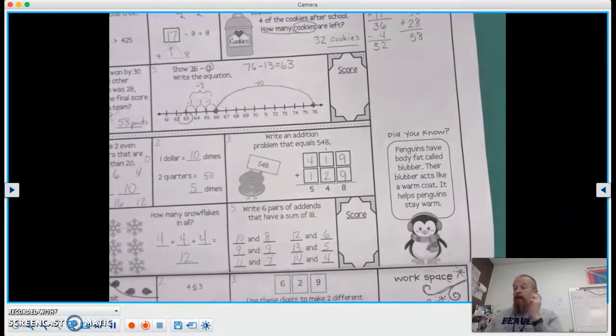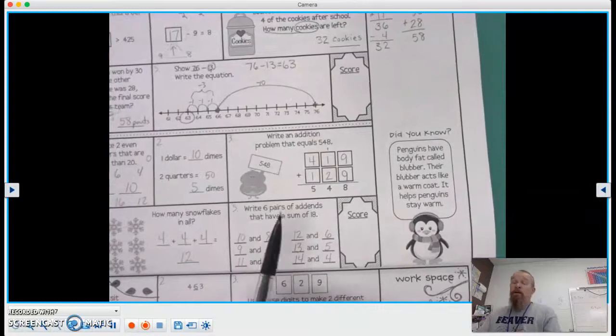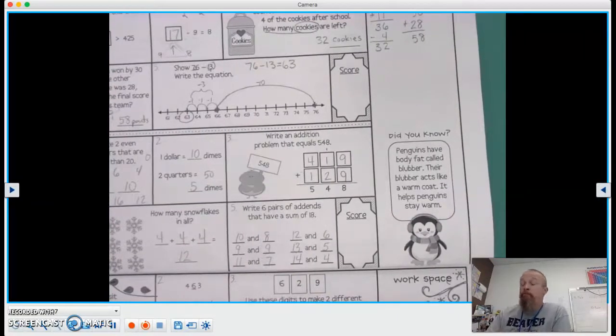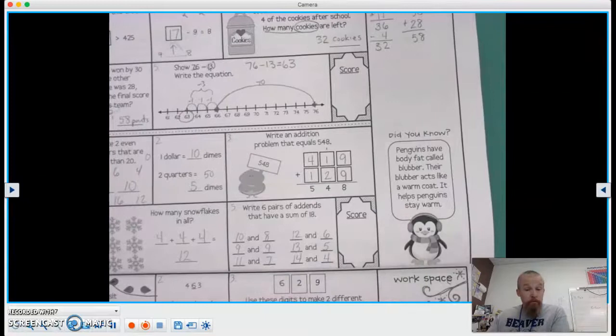Again, there are other options there. And you can have them flipped around too because of our commutative property of addition. So we could have 6 and 12.